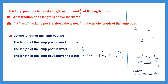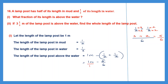So the length above water is 1 meter minus 5/6. Writing 1 as 1/1, the LCM is 6. The first fraction: 1/1 — multiply by 6 to get 6/6. Minus 5/6. So 6 minus 5 is 1, giving 1/6. The fraction of the lamp post's length above the water is 1/6.